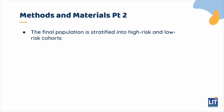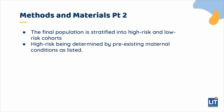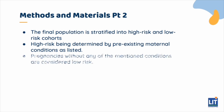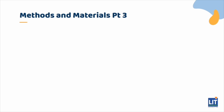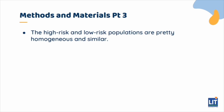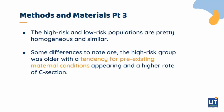The final population is stratified into high-risk and low-risk cohorts, with high-risk being determined by pre-existing maternal conditions as listed. Pregnancies without any of the mentioned conditions were considered low-risk. The classification does not include pregnancy-related complications such as gestational diabetes, abruption, and/or pre-eclampsia. The high-risk and low-risk populations are pretty homogeneous and similar. Some differences to note are the high-risk group was older with a tendency for pre-existing maternal conditions and a higher rate of C-section.